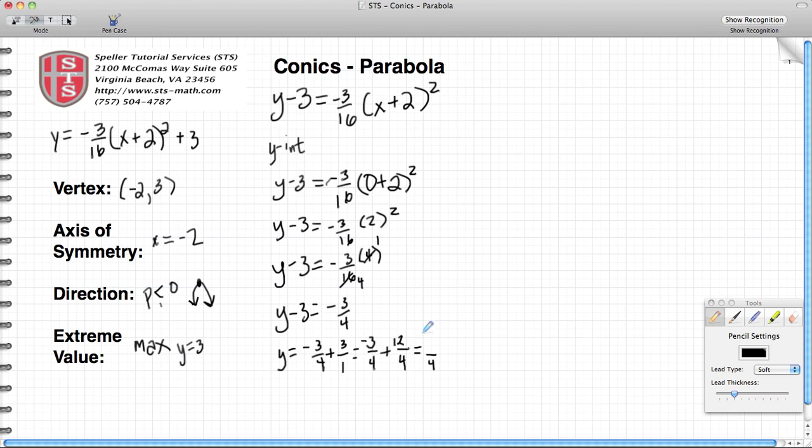Now I'm just going to add my numerators: negative 3 plus 12 gives me positive 9, and my denominator stays the same at 4. Never add those denominators.